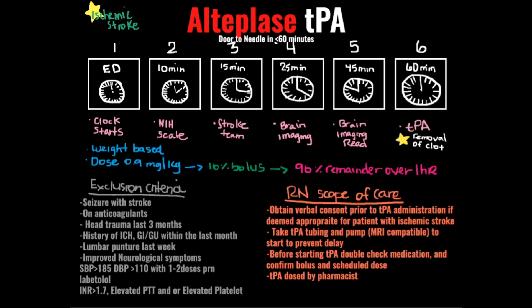My name is Christina, nurse practitioner. Alteplase TPA is for ischemic stroke. The goal for door to needle is less than or equal to 60 minutes. I've organized this into a six-step phase.